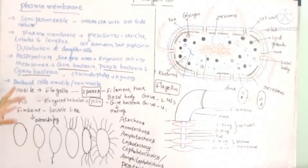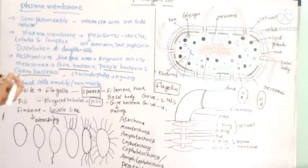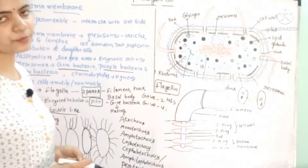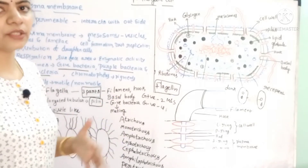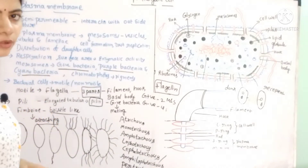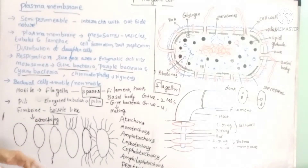The last surface structure is fimbriae — small bristle-like structures on bacteria. Fimbriae help bacteria attach to a substrate. For example, bacteria use fimbriae to attach to surfaces such as stones.